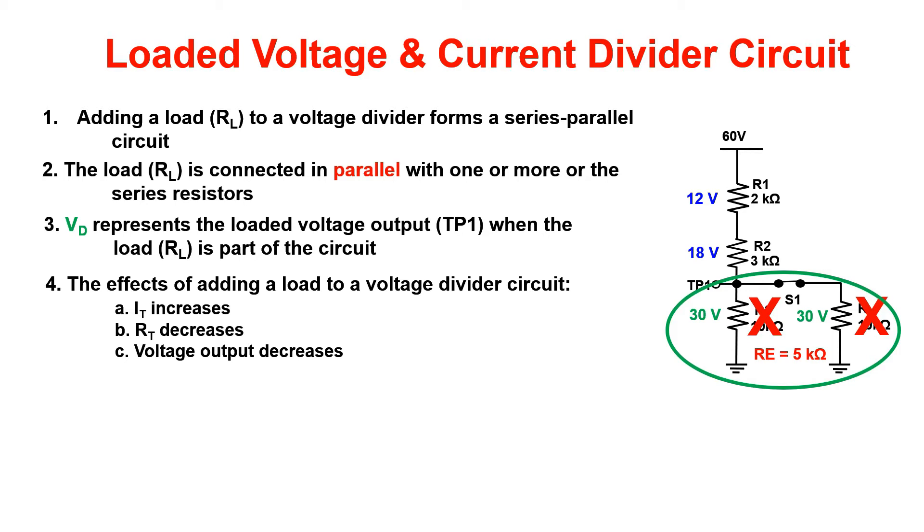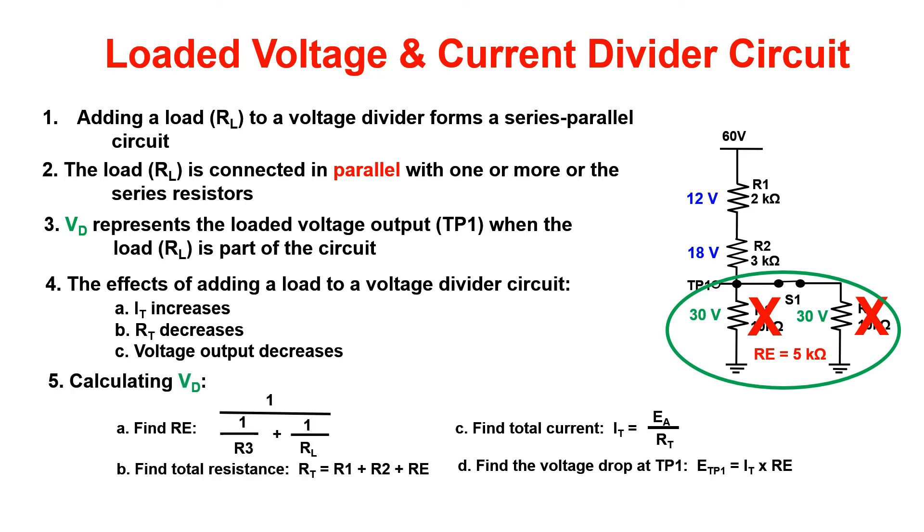To calculate VD, first find the RE of the resistors in parallel. Then add that value to the resistors in series. We can then calculate total current. To find the voltage drop at test point 1, you have to multiply IT by the RE value from step 1. That's all there is to it.